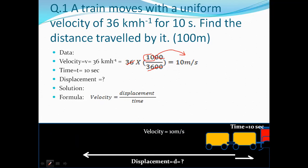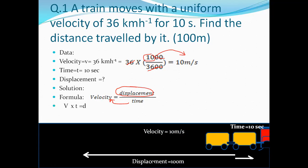The solution uses the formula: velocity equals displacement over time. Rearranging, displacement equals V into T. So displacement equals 10 meters per second multiplied by 10 seconds, giving us 100 meters. That is our answer.